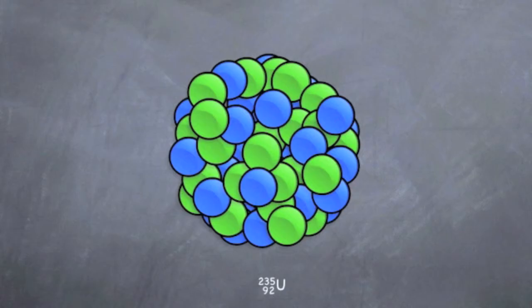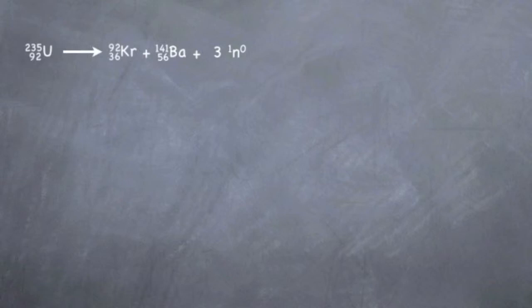If you take a uranium atom, send a neutron through it, it will blow up in two pieces, giving up three neutrons and a lot of energy.